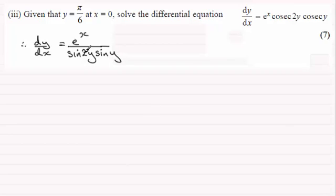So if I multiply both sides by sine 2y sine y, then rearranging this I'm going to get...